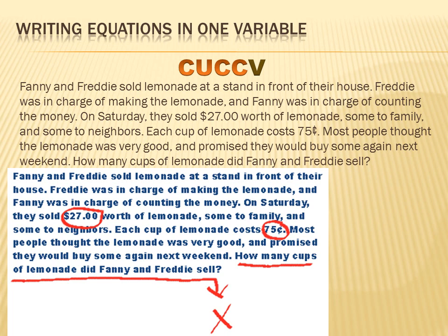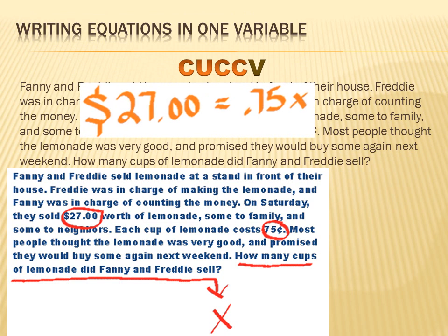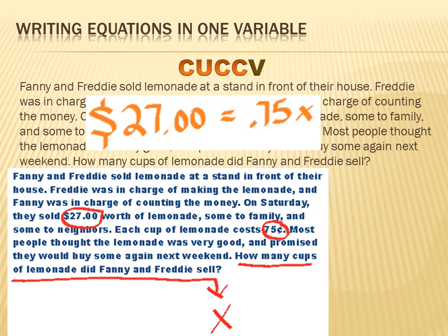We go a little further and it says each cup costs 75 cents — another number, let's circle it. Then at the end is the question: 'How many cups of lemonade did Fanny and Freddie sell?' We give that a variable name — let's call it x. Now we've simplified all those words down to just a few things: $27, 75 cents, and x. That's much simpler, and we can see that 27 equals 75 cents per glass times the number of glasses sold. So the equation is: 27 = 0.75x.